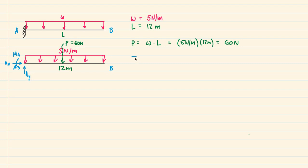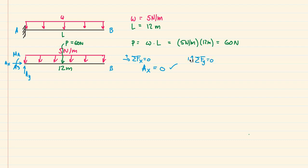Let's do the easiest one first. Sum of forces in the x-direction equals zero — we only have Ax, so Ax equals zero. Then sum of forces in the y-direction equals zero, with up as positive: we have positive Ay and minus 60 newtons, giving us Ay equals 60 newtons.